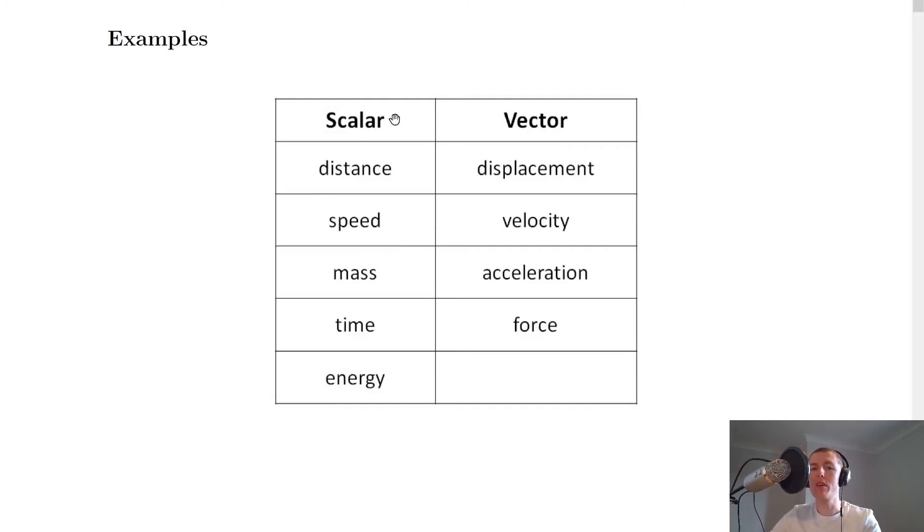So we've got some examples of typical scalars and typical vectors. So for scalars we have distance, speed, mass, time and energy. And for vectors we have displacement, velocity, acceleration and force.